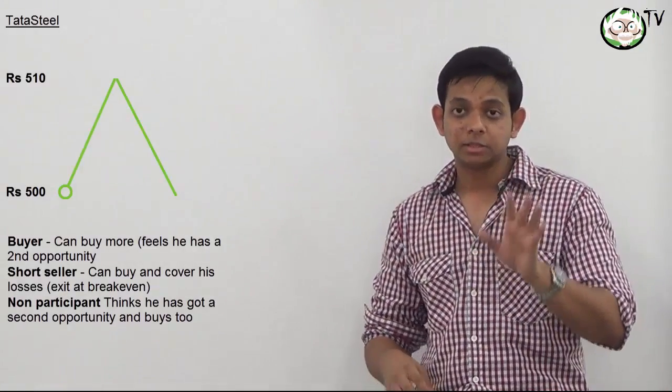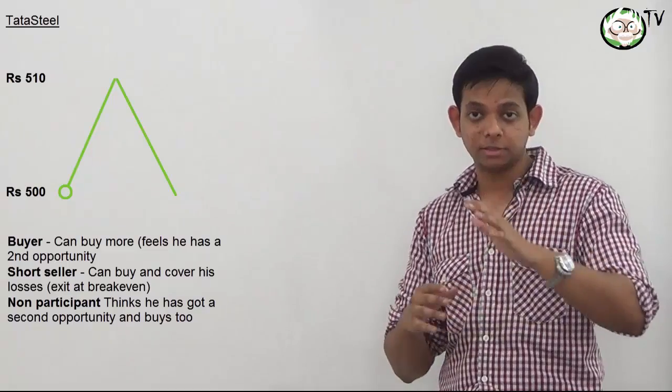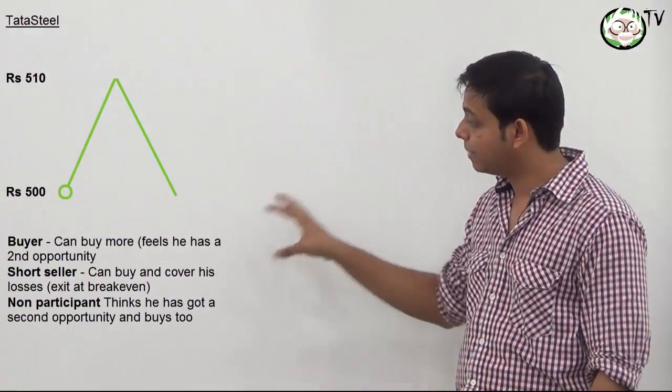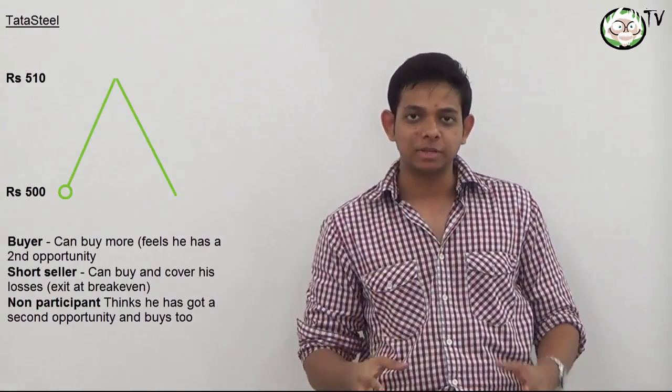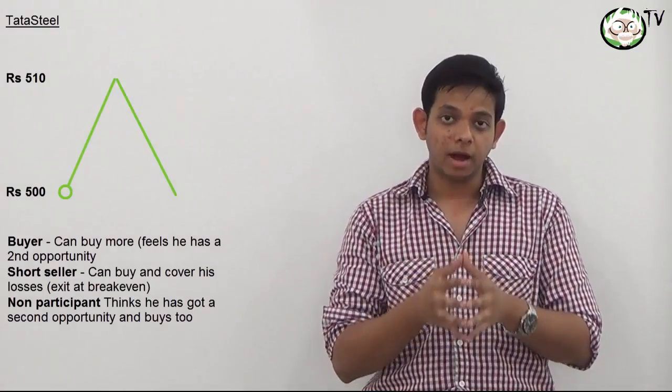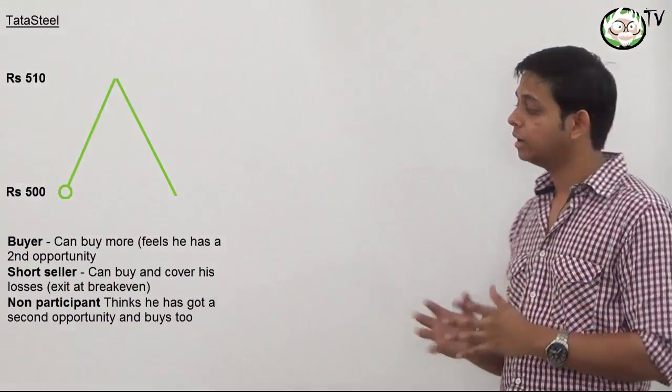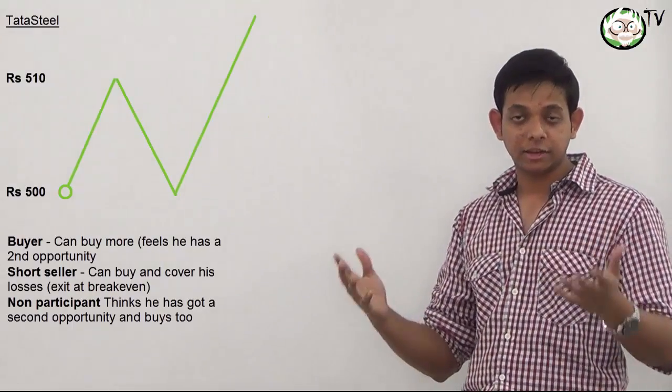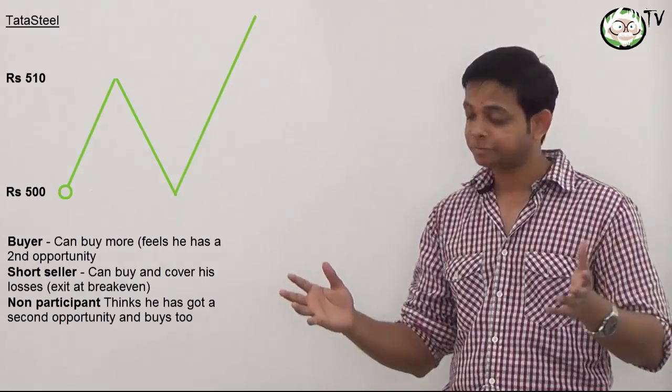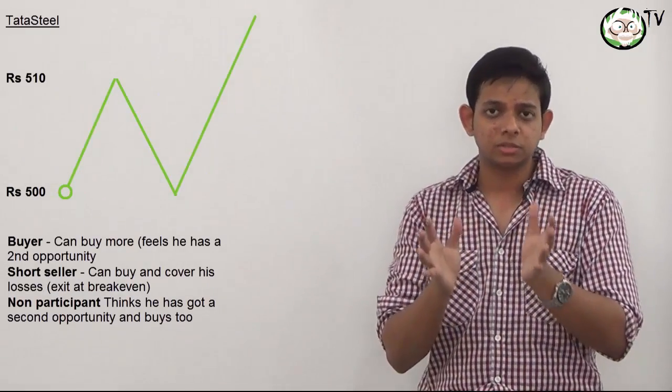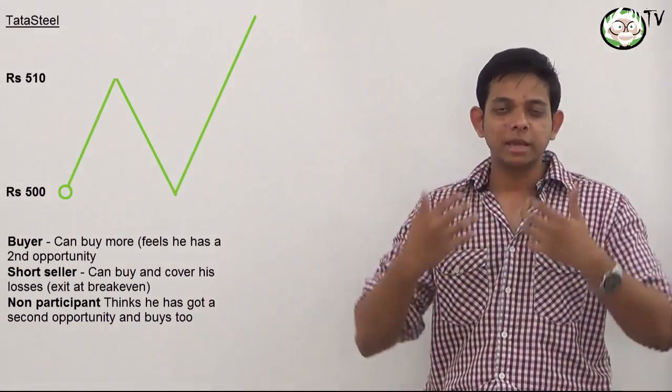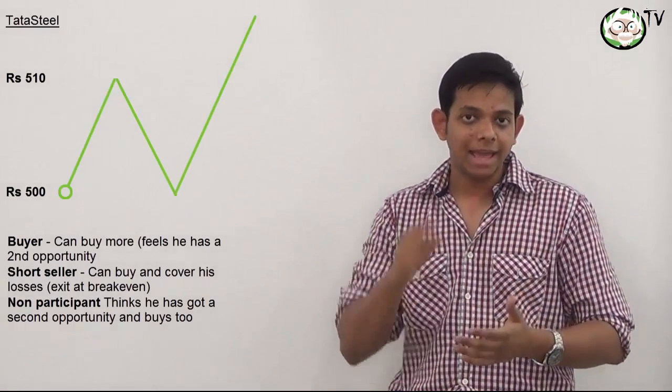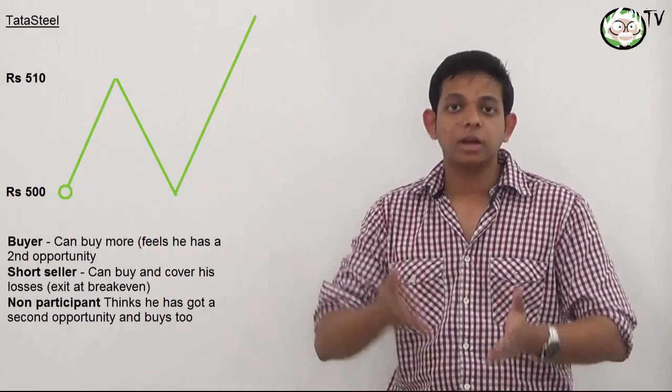And the third participant, the person who was actually the non-participant, the person who had no position, thinks he has got a second opportunity at Nirvana. And he buys at the same price. So all three participants now have an incentive and a reason to buy, and the absence of supply allows prices to move up.